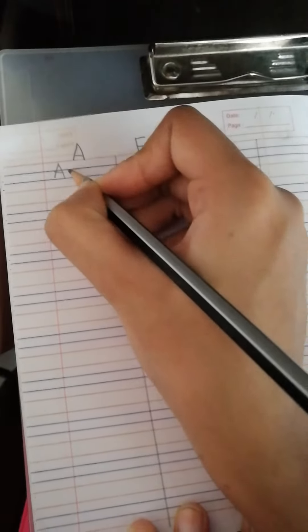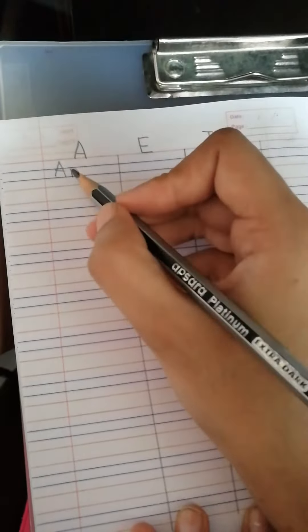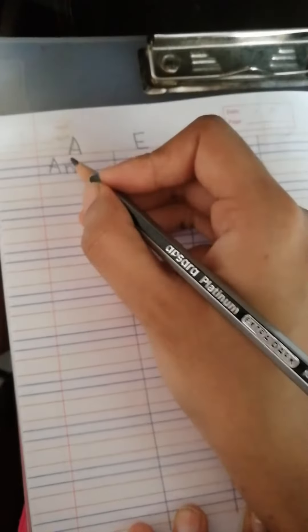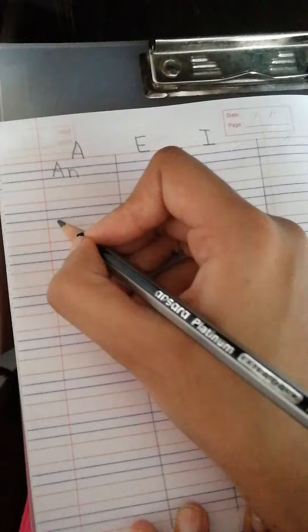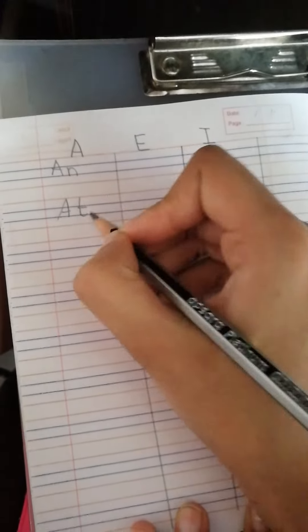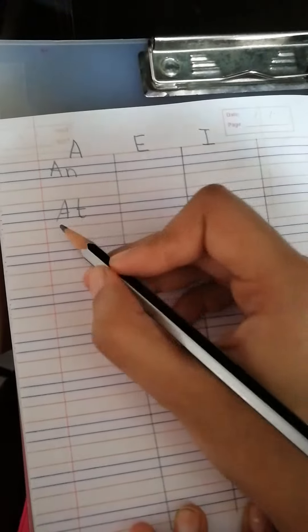A, N, N. Say and write A, N, N. Another word which starts from letter A is a, t, at. A, t, at.